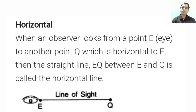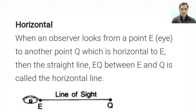Horizontal line: when an observer looks from point E to another point Q which is horizontal to E, then the straight line EQ between E and Q is called the horizontal line. The horizontal line is always parallel to the X axis.